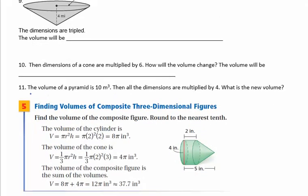Number 11 is a little different. It says the volume of a pyramid is 10 meters cubed, then all dimensions are multiplied by 4. We don't have a picture or original dimensions — you need to use the rule to figure out how the volume changes when dimensions are multiplied by 4, and then find the new volume.